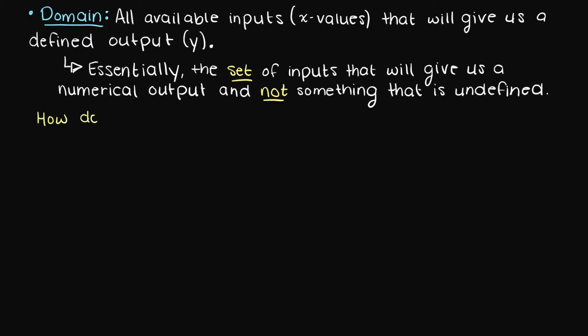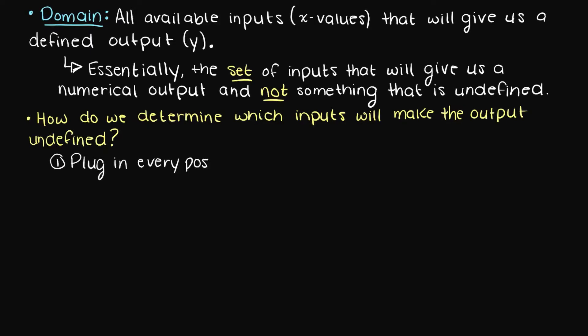Determining which inputs will make our function work can be found in several ways. Firstly, we could just plug in every possible number from negative infinity to positive infinity, make a giant table, and just see which inputs do not work. However, this would be impossible and even on a smaller scale would be extremely time consuming.